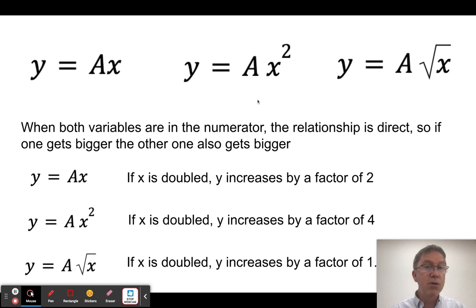So in this case, if y equals, and we're just going to use A as being some sort of a non-changing constant. So if it's y equals Ax, then what that means is if you double y, you double x, and vice versa.